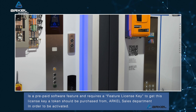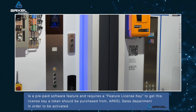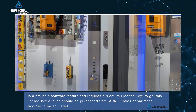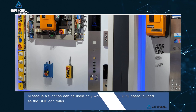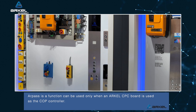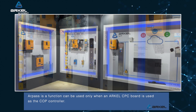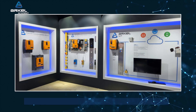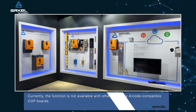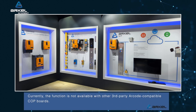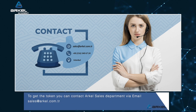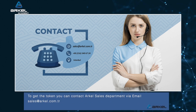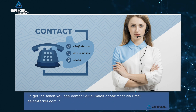To get this license key, a token should be purchased from Arkel's sales department. In order to be activated, the RPAS function can be used only when Arkel's CPC board is used as the COP controller. Currently, the function is not available with other third-party Arkel-compatible COP boards. To get the token, you can contact Arkel's sales department via email: sales@arkel.com.tr.